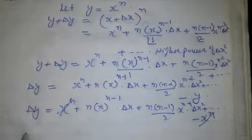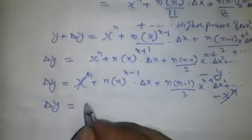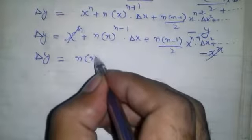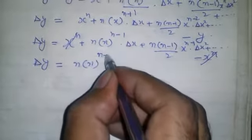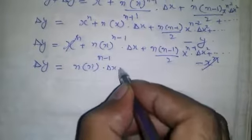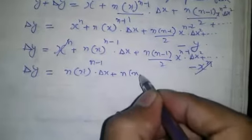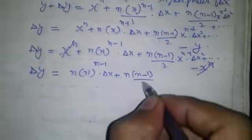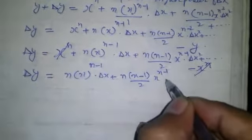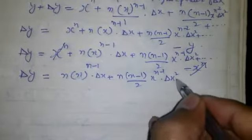The x to the power n terms cancel each other. Now we have delta y equal to n times x to the power n minus 1 times delta x, plus n times n minus 1 over 2 times x to the power n minus 2 times delta x squared, plus so on — higher powers of delta x terms.